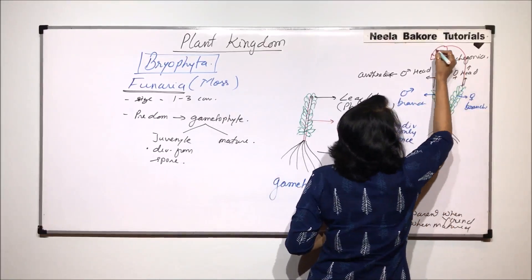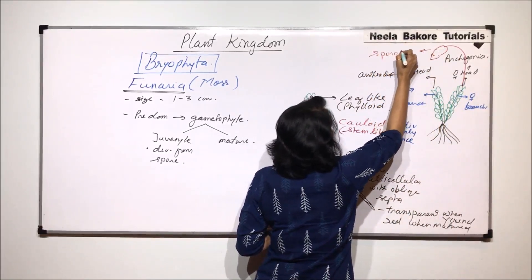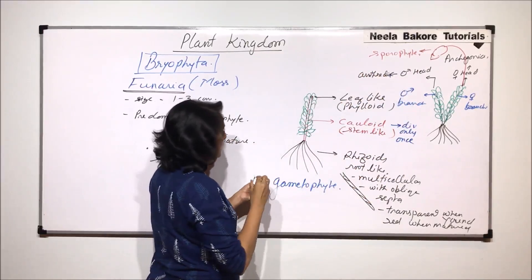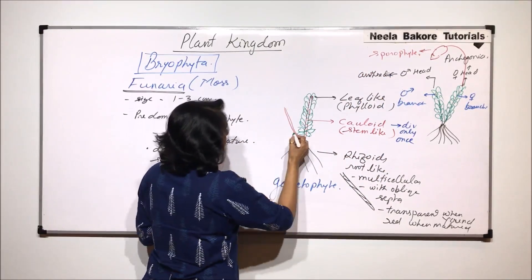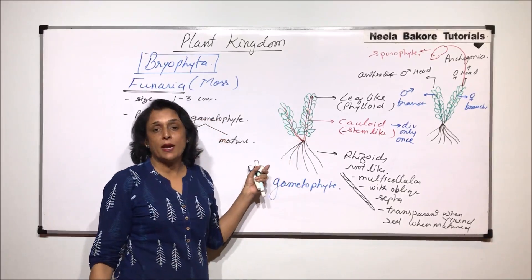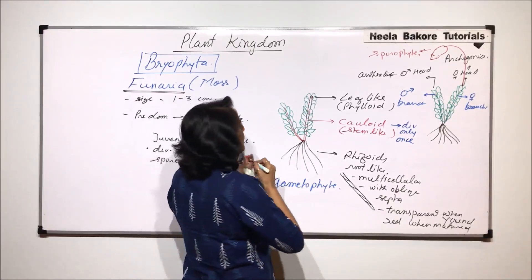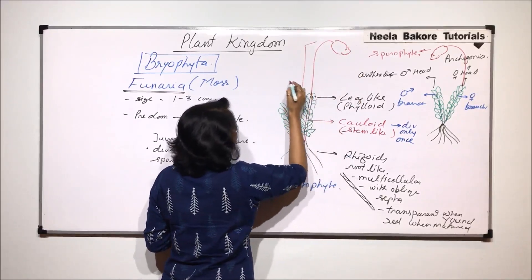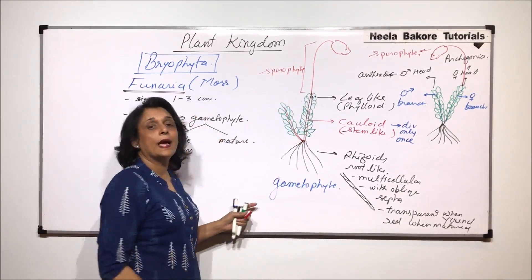So this capsular structure which is there, this structure is actually the sporophyte. So if I draw one more branch here, say this is one branch and let me make one more branch with the same spirally arranged leaves. After fertilization the branch which remains erect is normally the female branch. And on this would grow this capsular structure. So this part is the sporophyte and this part is the gametophyte.